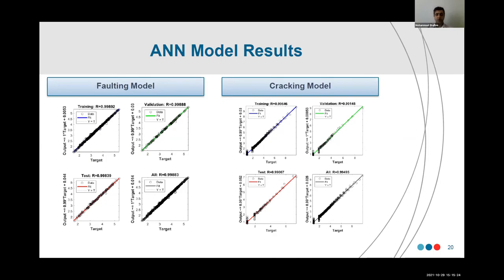This is a step forward in climate change impact studies, because most studies around the world are mainly qualitative. It's very important for practitioners to quantify the effect of climate change on pavement performance, because the interaction between temperature, humidity, water table, frost, and other factors is very sophisticated. Qualitative analysis is not sufficient — there is a need for more mechanistic analysis, coupling it with artificial neural networks and other machine learning techniques, which are evolving on a daily basis and can help correlate pavement performance with different climatic factors.